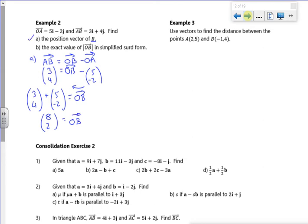Find the exact value of |OB|. Well, that just tells you to do Pythagoras. It just wants its length. So it's square root of 8 squared plus 2 squared. So 64, 68. So it will be root 68, which according to this, its magnitude is 2 root 17.